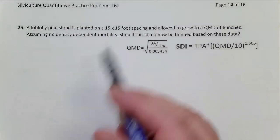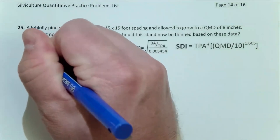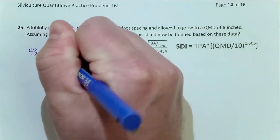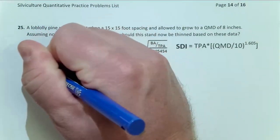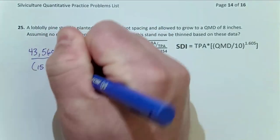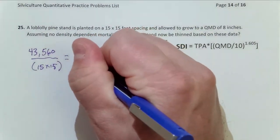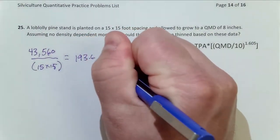We know this stand is planted on a 15 by 15 foot spacing. So let's figure out how many trees per acre that is. 43,560 divided by 15 by 15. So there's the short way to calculate trees per acre from spacing. And that equals 193.6 TPA.